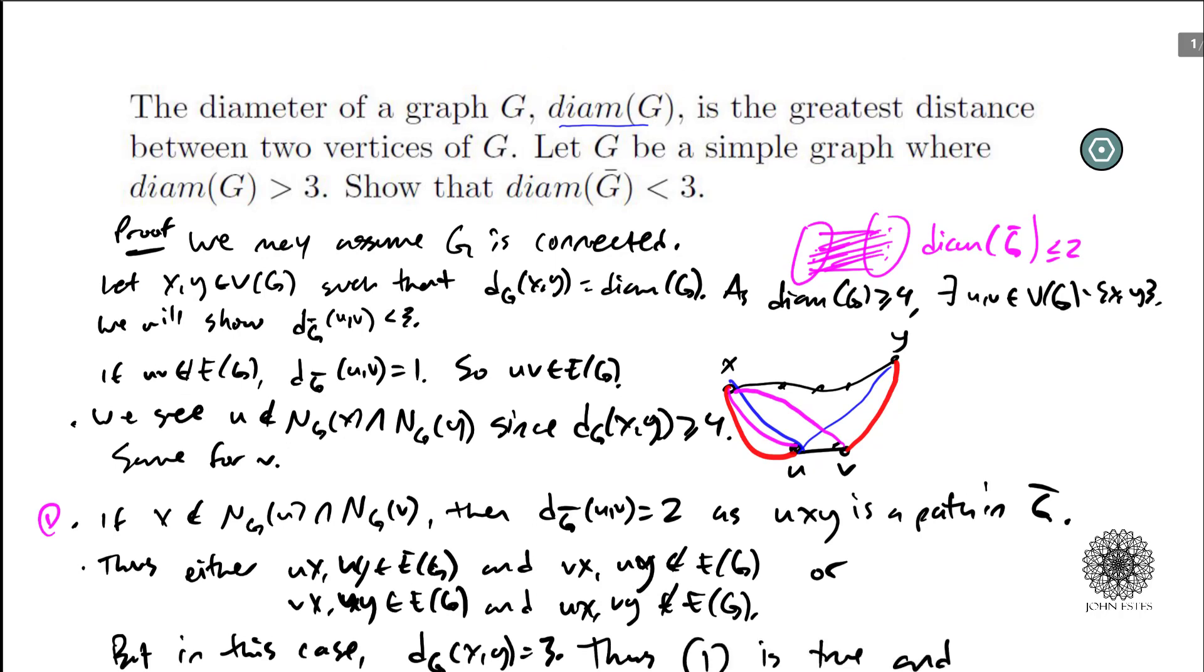And more important, that diameter of G bar, then, has to be less than or equal to two, which is exactly what we're trying to show.